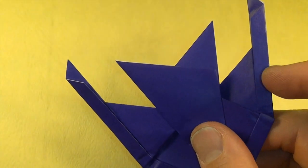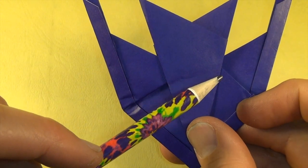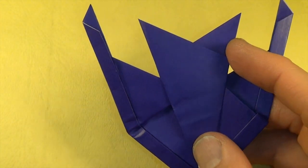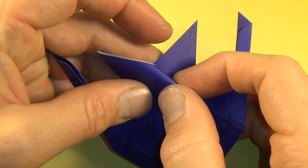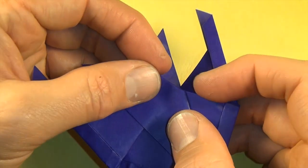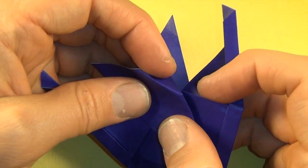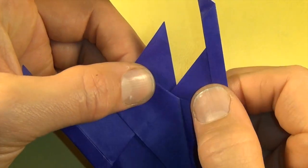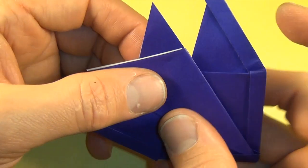And we're going to mountain fold between this point and this point. The fold goes around this edge right here. That's around there. And the same thing on the back side.